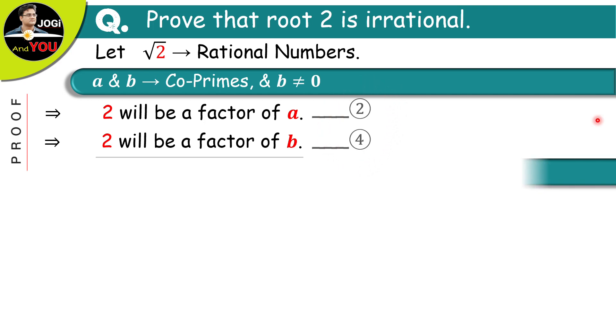Equation number 2 and 4. According to these equations, digit 2 is a factor of a and the same digit 2 is also a factor of b.